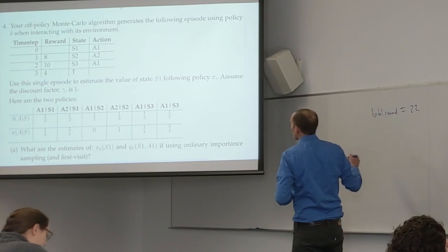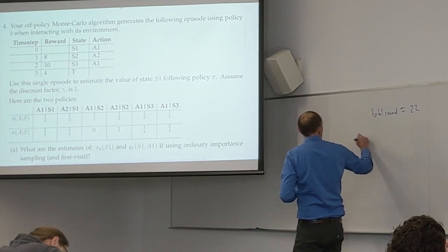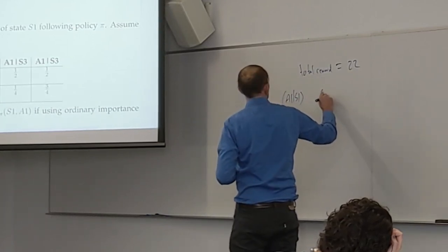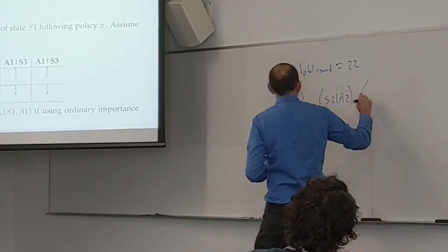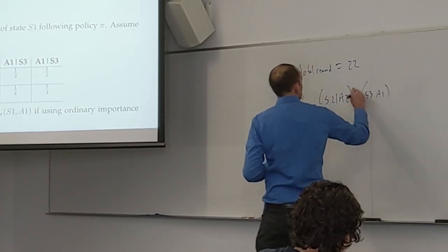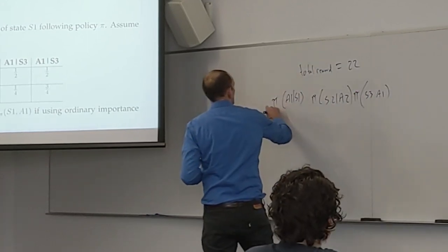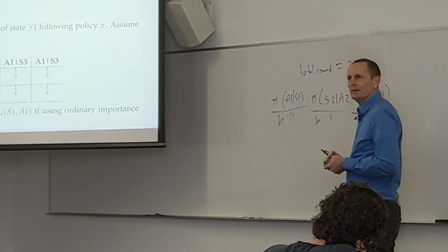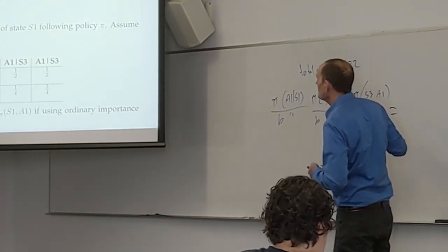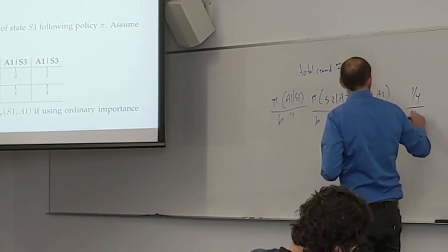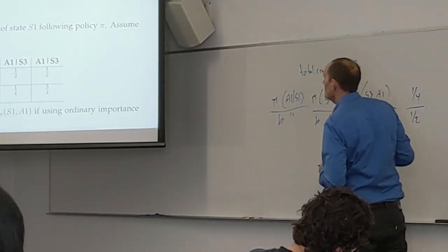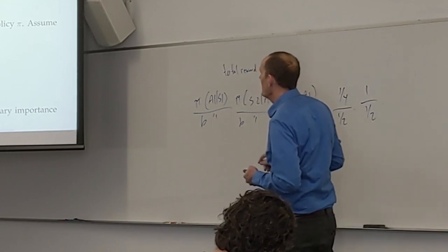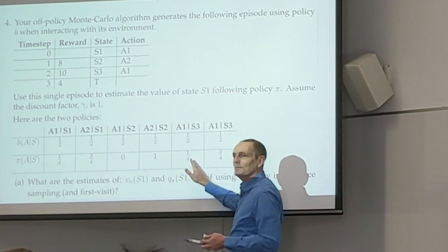We have basically pi(A1|S1) times pi(A2|S2) times pi(A1|S3), and we look at the ratio of the pi's over the b's. Basically we've got A1S1 as 1/4 over 1/2, times S2A2, times S3A1. It kind of depended on whether you used this column or that column — it was unfortunate, but either one I marked as right.